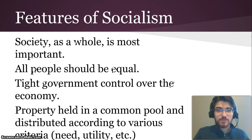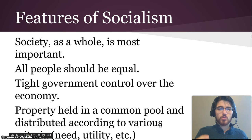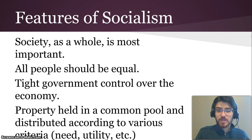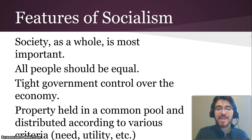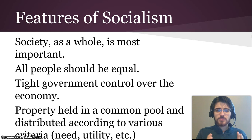In socialism, society as a whole is most important. Everyone needs to live together in harmony to work towards the same goals of having a solid, good-producing society. All people should be equal, and there would be tight government control over the economy to help make sure that happens. Property — especially property used to produce more stuff — would be held in a common pool and distributed according to various criteria, like how much it's needed or how efficiently it would be used, determined by the government, which ideally would be made up of experts and the people themselves. But as we will see later, it doesn't really work out like this.